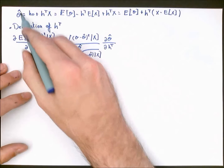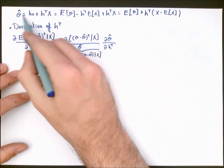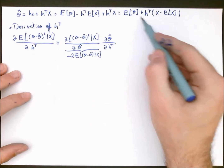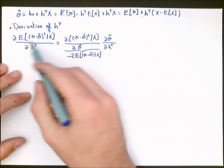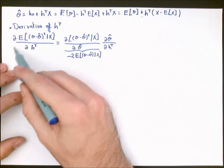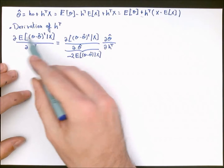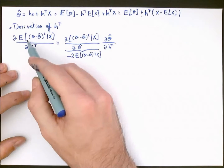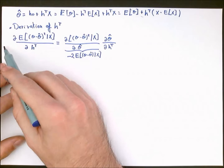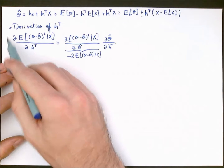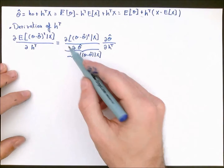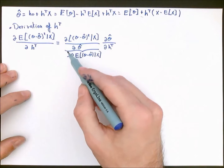Now that I have derived H0, I can plug it into the expression of the estimator. I only need to find H transpose at this point. To derive H transpose, I use the same strategy: rather than differentiating the mean squared error directly, I differentiate the conditional MSE with respect to H transpose, then take the expectation with respect to X and equate to zero. To differentiate the conditional MSE, I once more apply the chain rule.